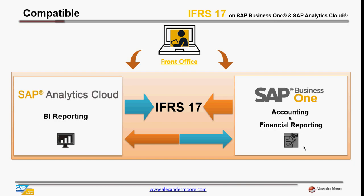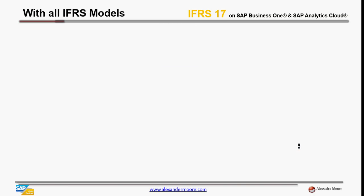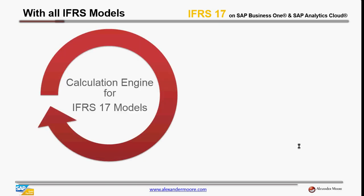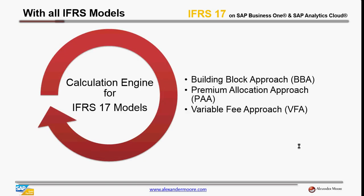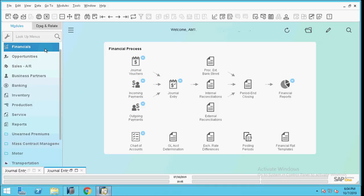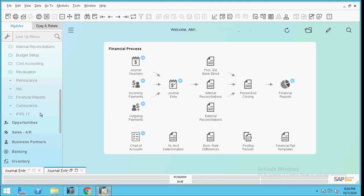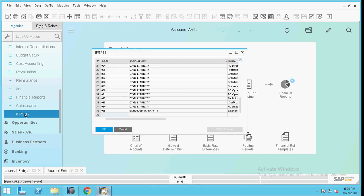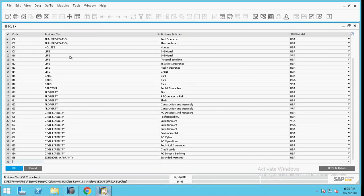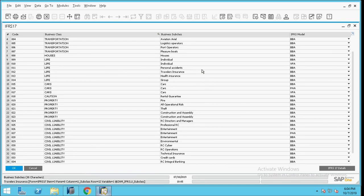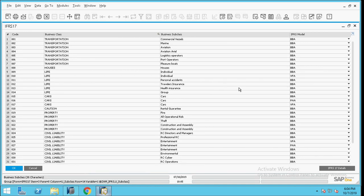Now let's look at how SAP Business One manages IFRS accounting postings and financial reporting. IFRS 17 models such as the Building Block Approach, Premium Allocation Approach, and Variable Fee Approach are fully supported. All the data are gathered together for the IFRS 17 requirements, and all business lines of the insurance company are included with the relative IFRS models.